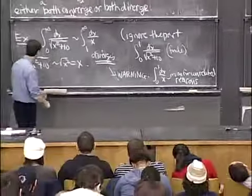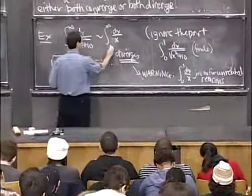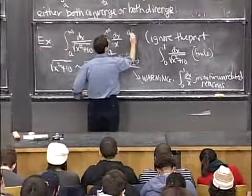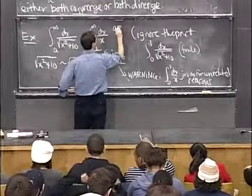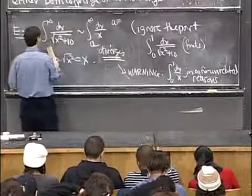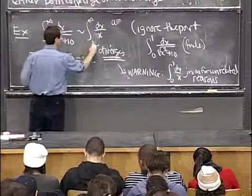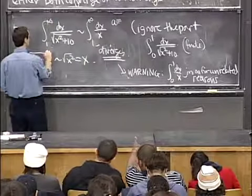So another way of saying this is that I should stick an a here and an a here and stay away from 0. So say a equals 1. If I make these both 1, that would be OK. If I make them both 2, that would be OK.